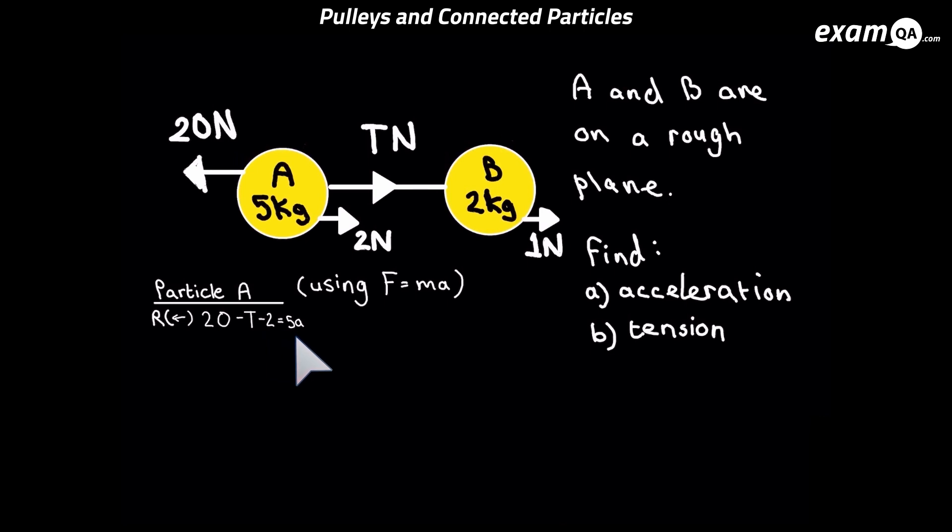You might have noticed that the tension and the two Newtons was put as negative. The reason being is, remember we said to the left is positive, and they're acting to the right, so we put them as negative. The 20 Newtons is to the left, and you can see that was positive.